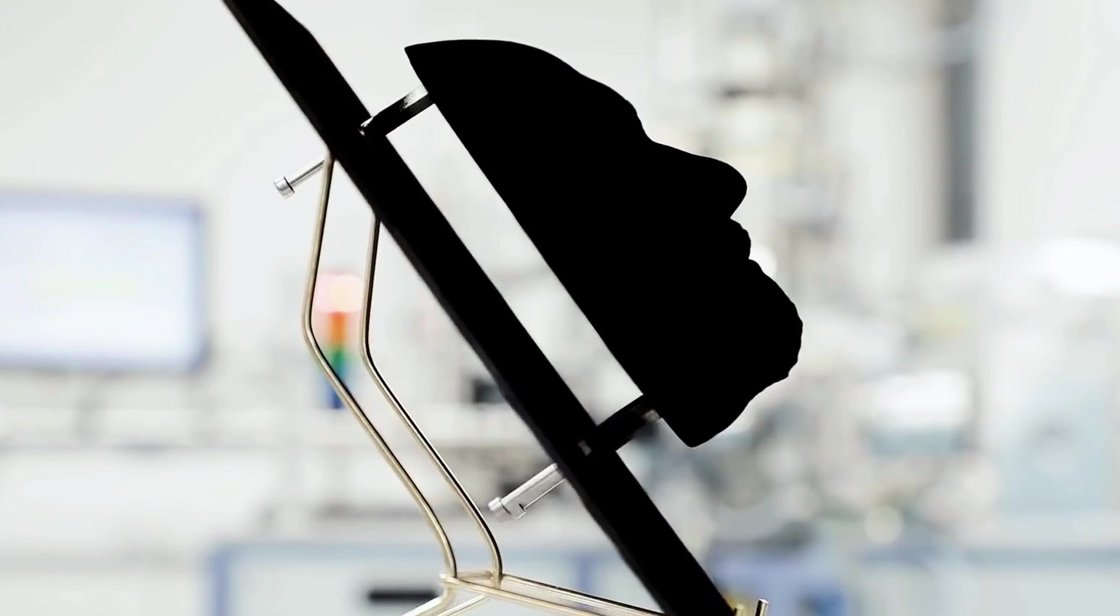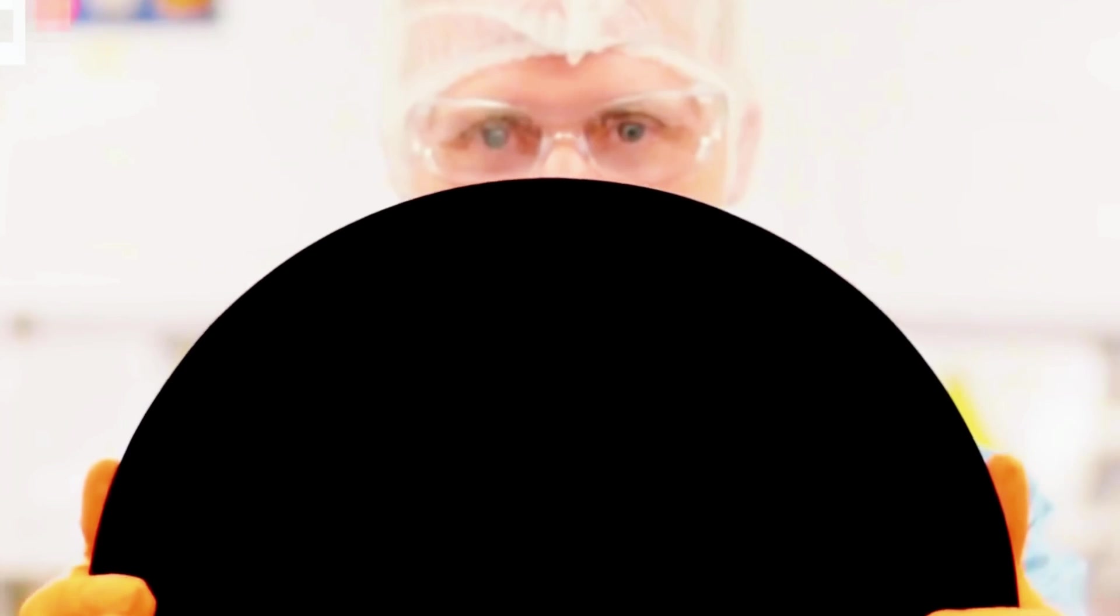Wardle and his colleagues at MIT developed the covering while exploring ways to grow CNTs on aluminum to improve its conductivity. When aluminum is exposed to air, it creates an oxide coating, which reduces its heat and electricity carrying characteristics.